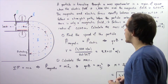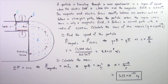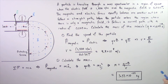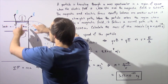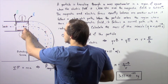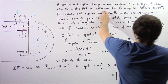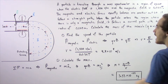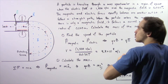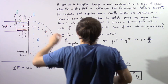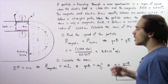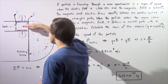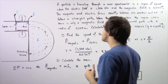Let's suppose a particle is traveling through a mass spectrometer in a region of space where the electric field is 1,500 volts per meter and the magnetic field is 0.034 Tesla. Within this region, we have a particle traveling through both an electric field and a magnetic field. The magnetic and electric forces exactly balance one another out so that the particle follows a straight pathway, as depicted by these dashed lines.